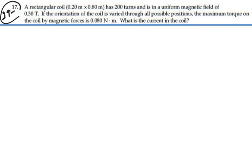If the orientation of the coil is varied through all possible positions, the maximum torque on the coil by magnetic forces is 0.08 newton meters. What is the current in the coil?